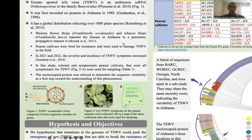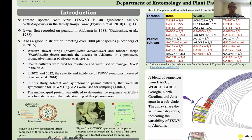The reason this virus is called ambisense is because the first two segments have more than one gene, and each gene has its own open reading frame read in the opposite direction from the other — that's why they are called ambisense. For the L segment, it has only one gene with one open reading frame read in one direction, so it has a negative-sense strategy.